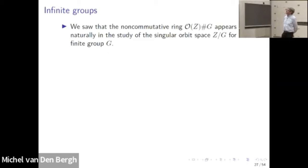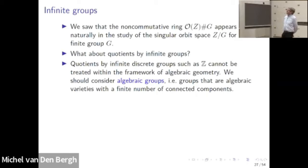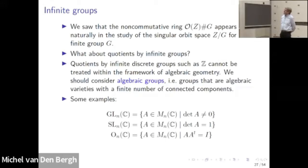Now we can ask: what about infinite groups? A finite group is a discrete group with a geometric object that is just a finite number of points. In algebraic geometry, one cannot work with infinite discrete groups — algebraic geometry is not equipped for that. So we should consider algebraic groups, which are groups that are algebraic varieties. Examples include the special linear group, the general linear group, and the orthogonal group.